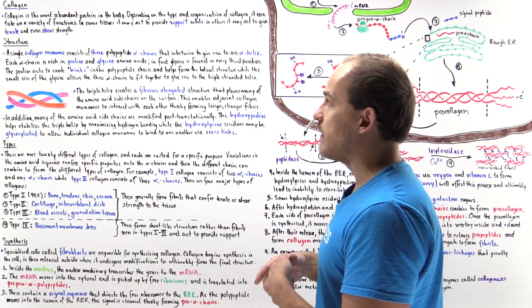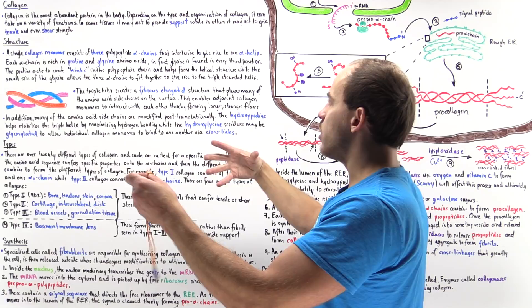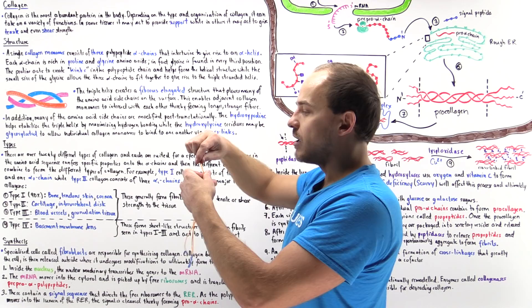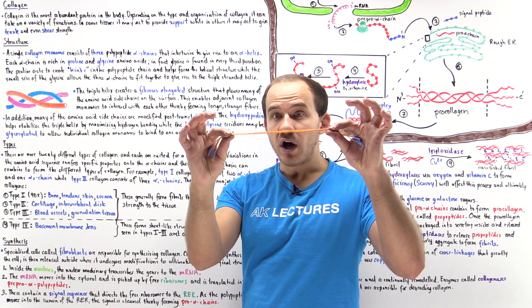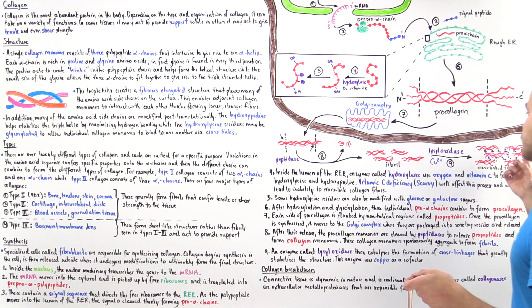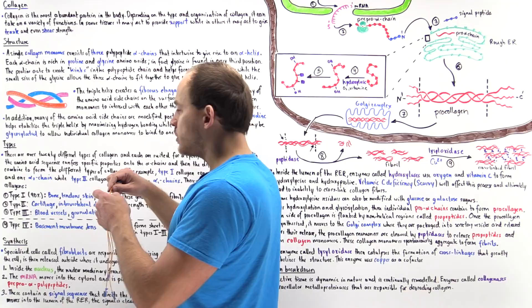There are other amino acids — for example, lysine — that are also found within the individual alpha chains. So we have chain one, chain two, chain three, which intertwine to give rise to this fibrous elongated structure. If we examine the residues on this alpha helix, most of these residues are actually going to be pointing out on the surface of the alpha helix. This is important because it allows one monomer to interact with an adjacent monomer to actually form cross-linkages. We'll come back to these cross-linkages when we talk about the synthesis of collagen within our cells.